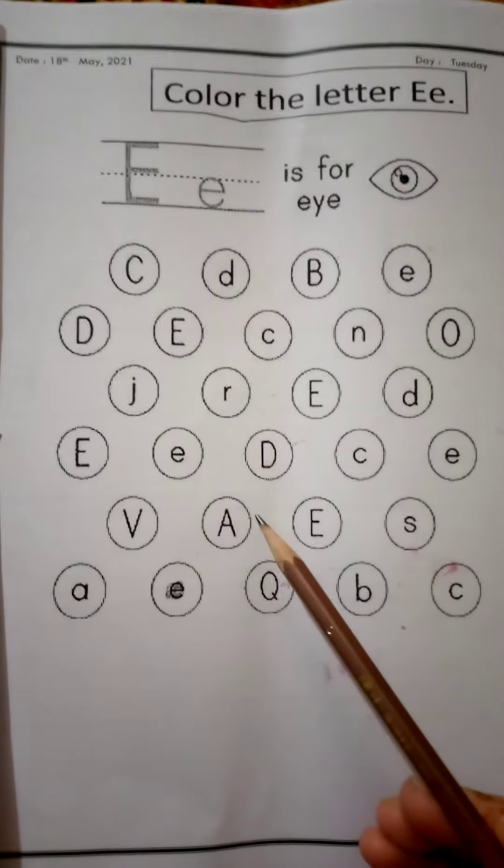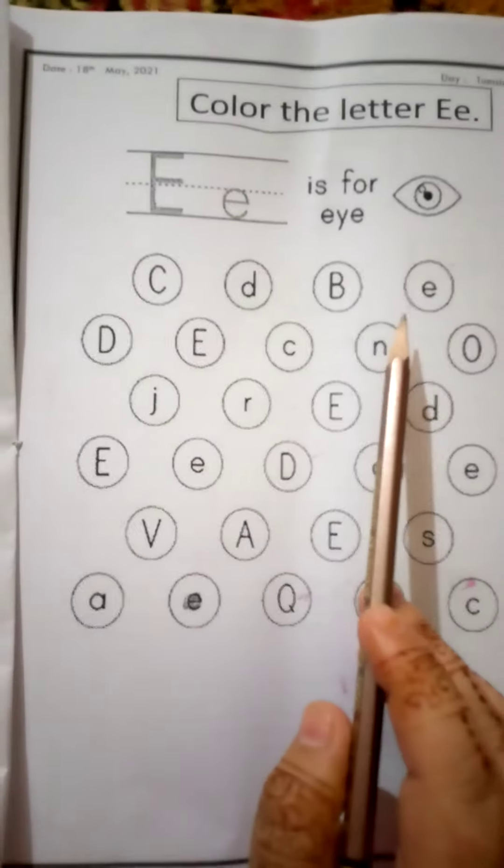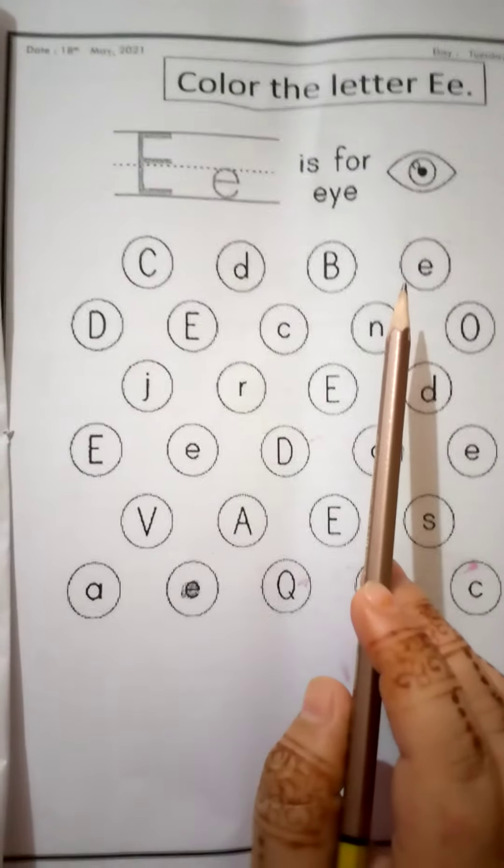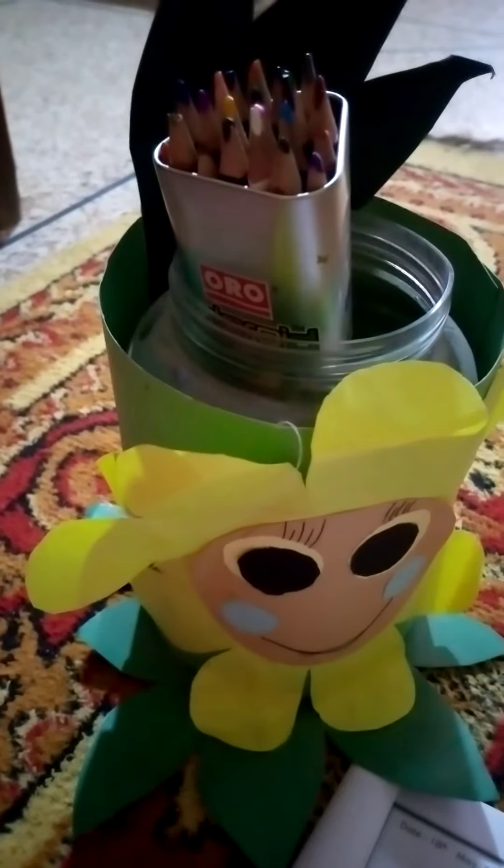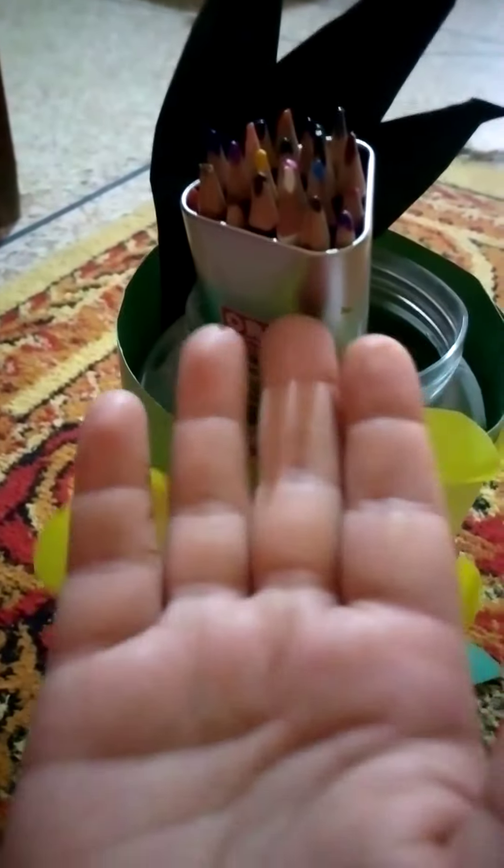Now look at the page. We have lot of letters but we only find letter E and then color the circle. Please dear kids, take out your colors. I have colors.